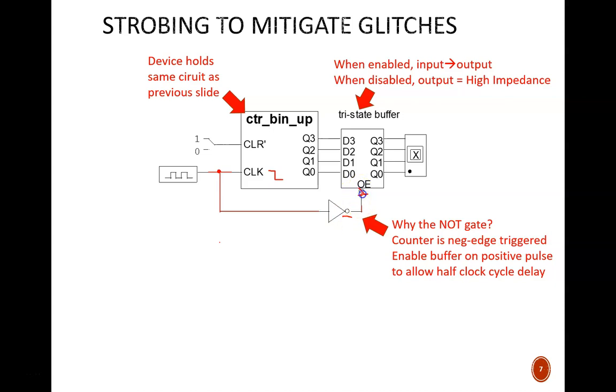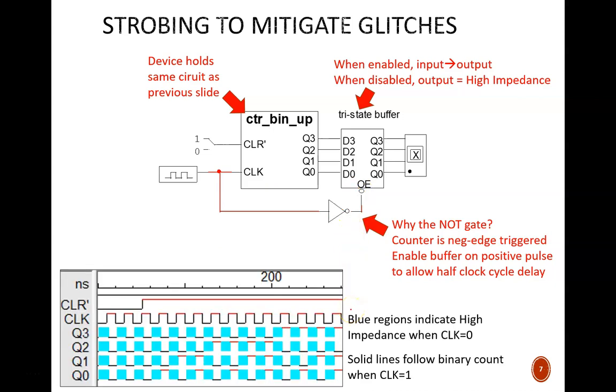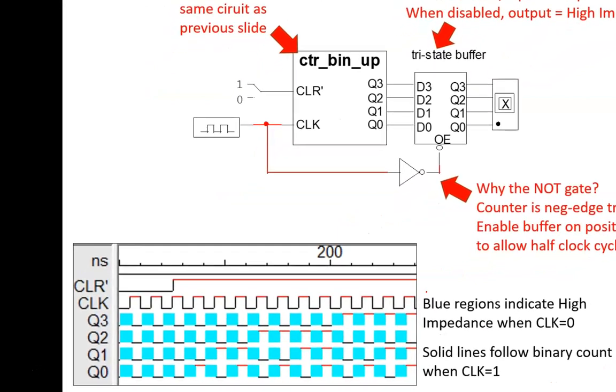The results of this layout are summarized in this timing diagram. Every time we see a blue region is when the buffer is disabled, which aligns with all the times when the clock is low. But, when the clock is high, the output shows a correct count.